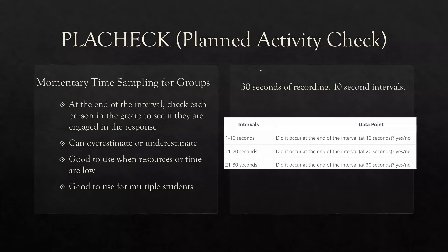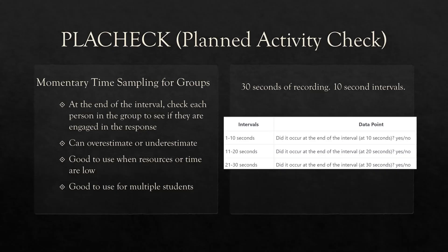Finally, play check or planned activity check — the long lost sibling of discontinuous measurement. Play check is just like momentary time sampling, but for groups. At the end of each interval, check each person in the group to see if they're engaged in the response. It can overestimate or underestimate, and it's good when resources or time are low — it's intended for multiple students. For a group of five, you do your thing, and at 30 seconds you look up and mark each one for a data point.